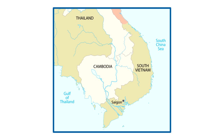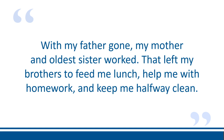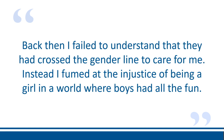The events take place in Vietnam during the early 1960s when the Communist Army was trying to take control. Saigon, now known as Ho Chi Minh City, was the capital. Lai writes: 'My father was missing in action, meaning the opposite side had captured him. With my father gone, my mother and oldest sister worked. That left my brothers to feed me lunch, help me with homework, and keep me halfway clean. Back then I failed to understand that they had crossed the gender line to care for me. Instead I fumed at the injustice of being a girl in a world where boys had all the fun.'